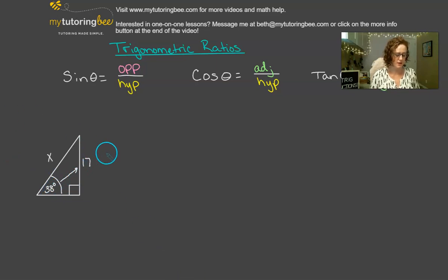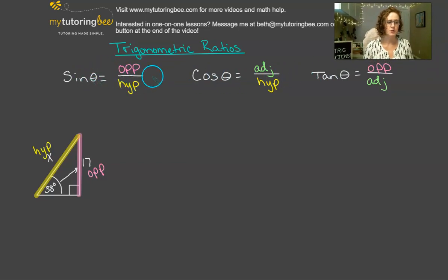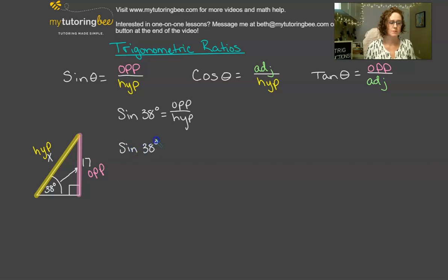Normally, if we did have this other length, we could use the Pythagorean theorem — a squared plus b squared equals c squared. But since we don't have that other length, we have to use our trigonometric ratios. From this angle's perspective, from 38 degrees, let's see where our two pieces of information lie. The length of this side is 17, and that is opposite from my angle of 38 degrees. And then the length x is the hypotenuse, because it is opposite the 90 degree angle.